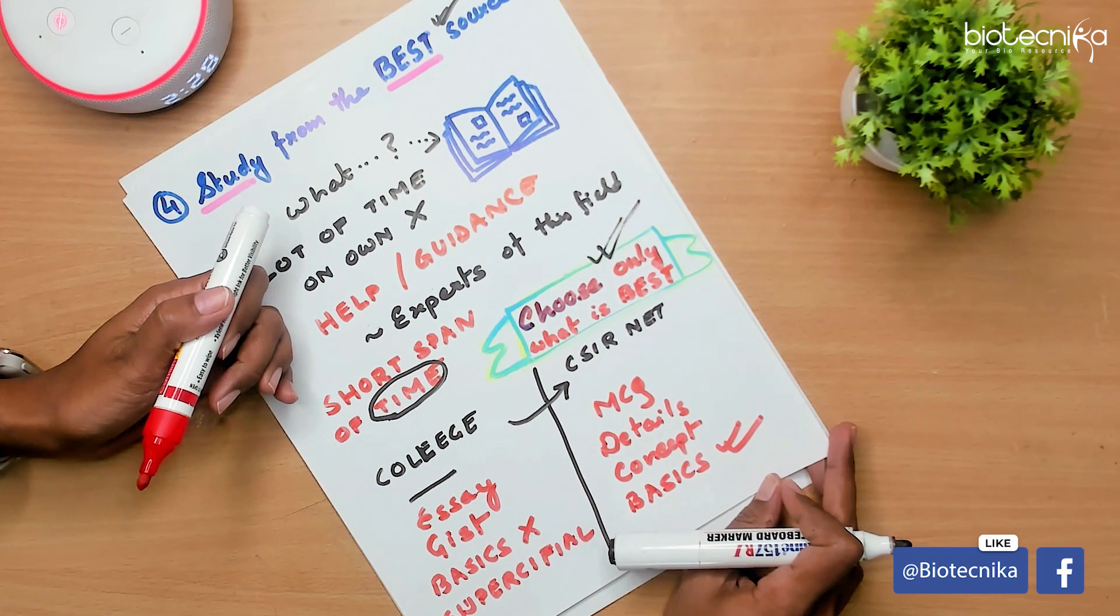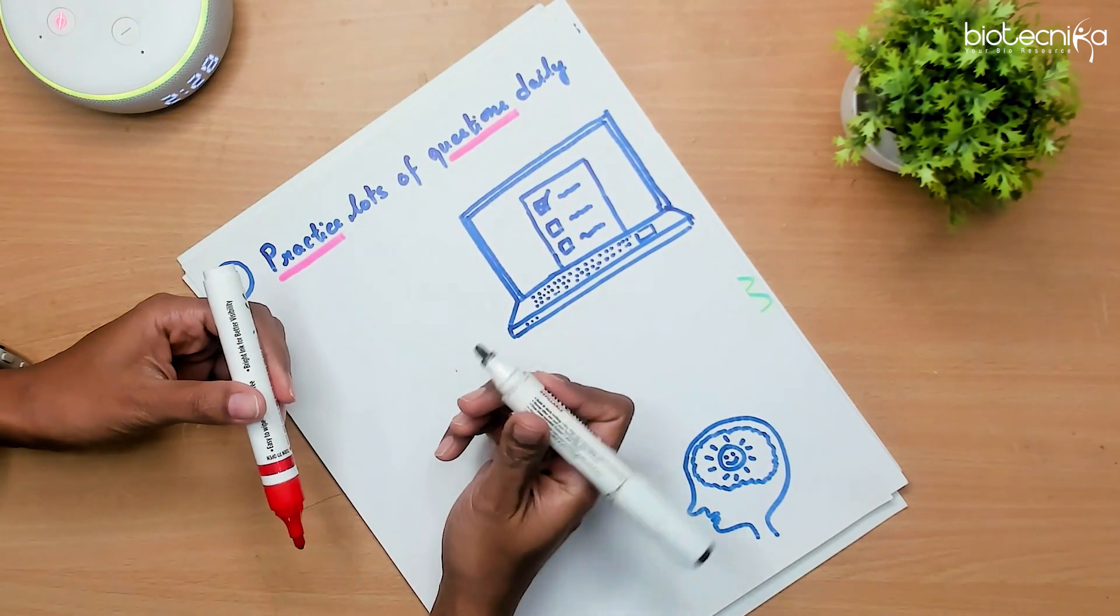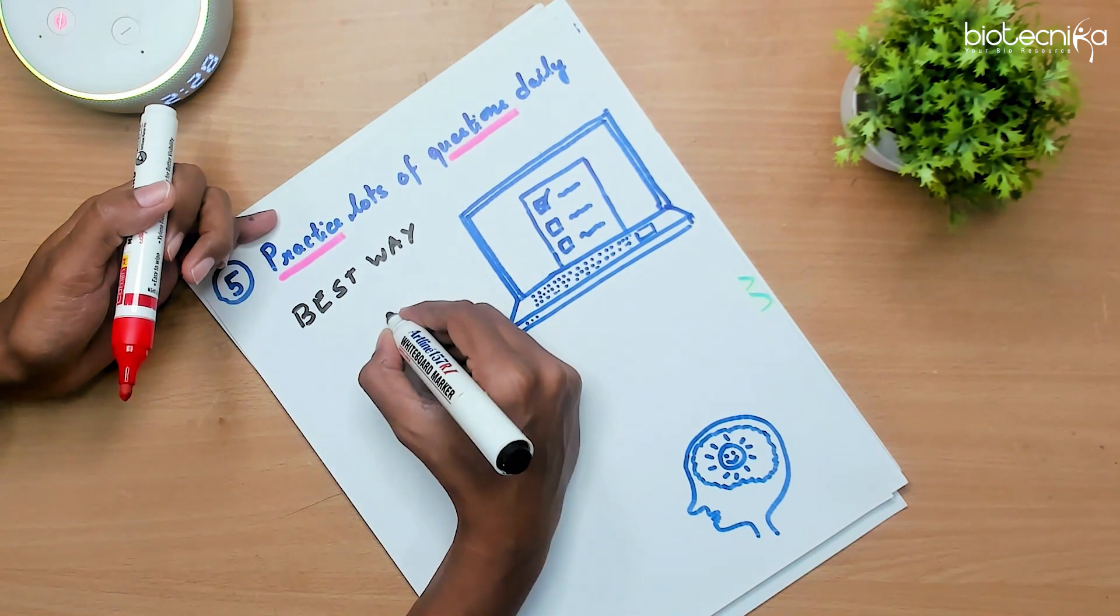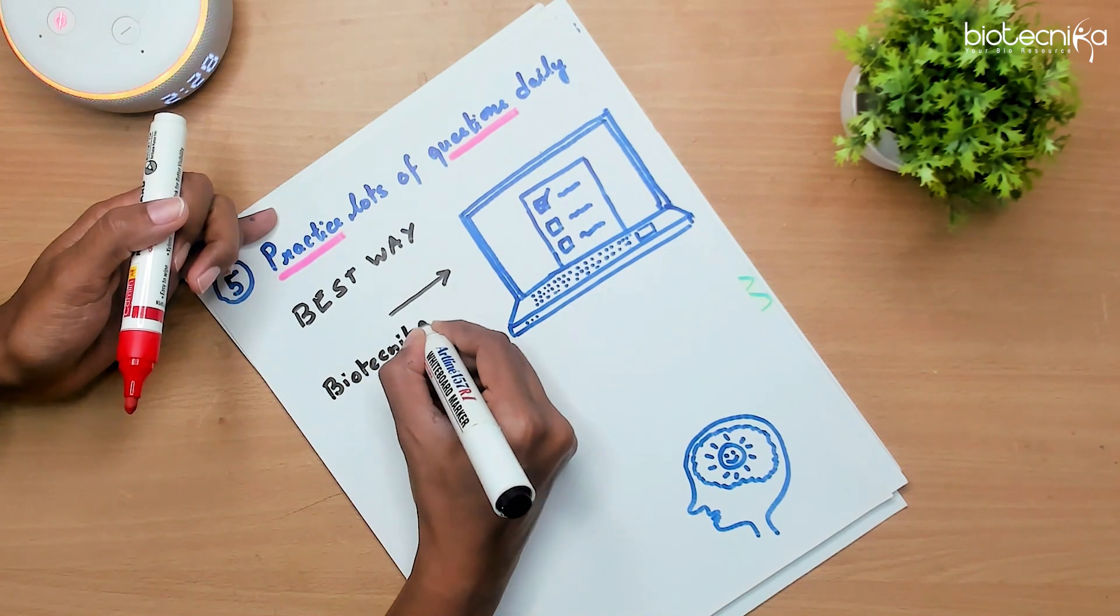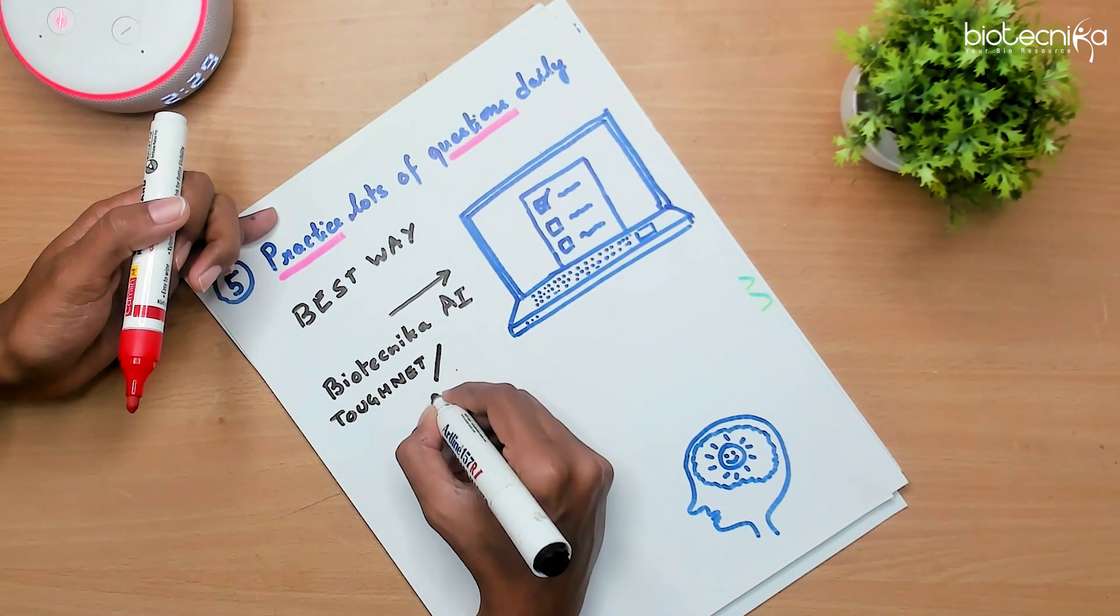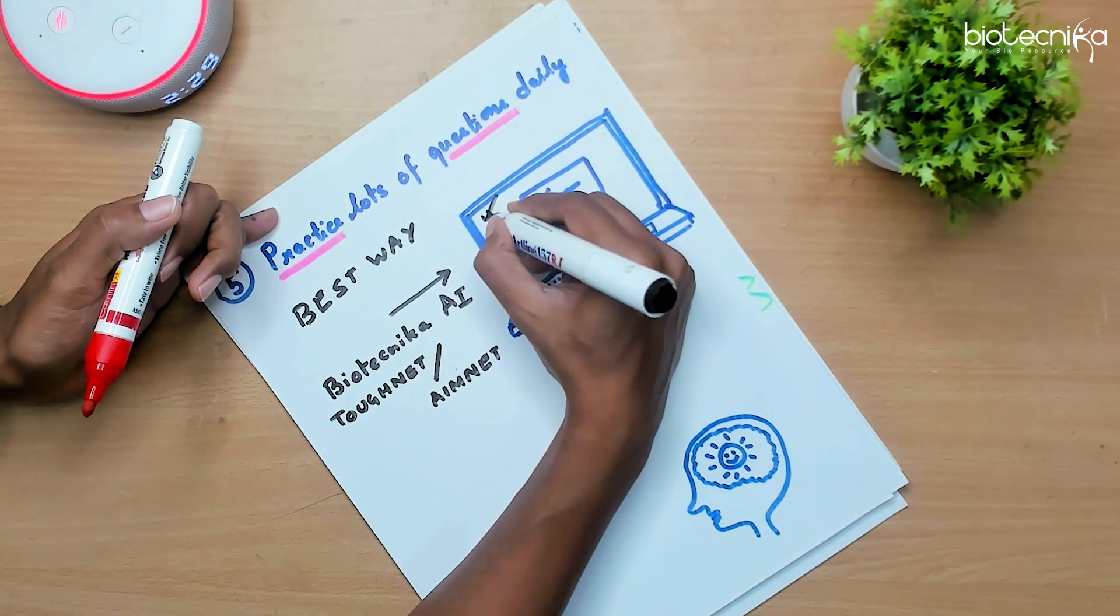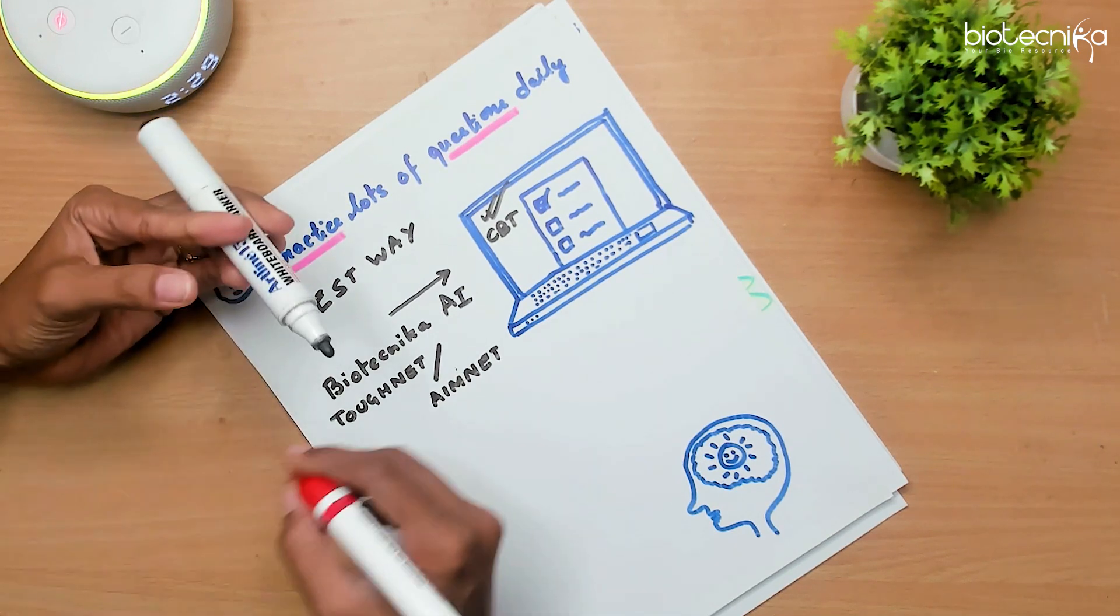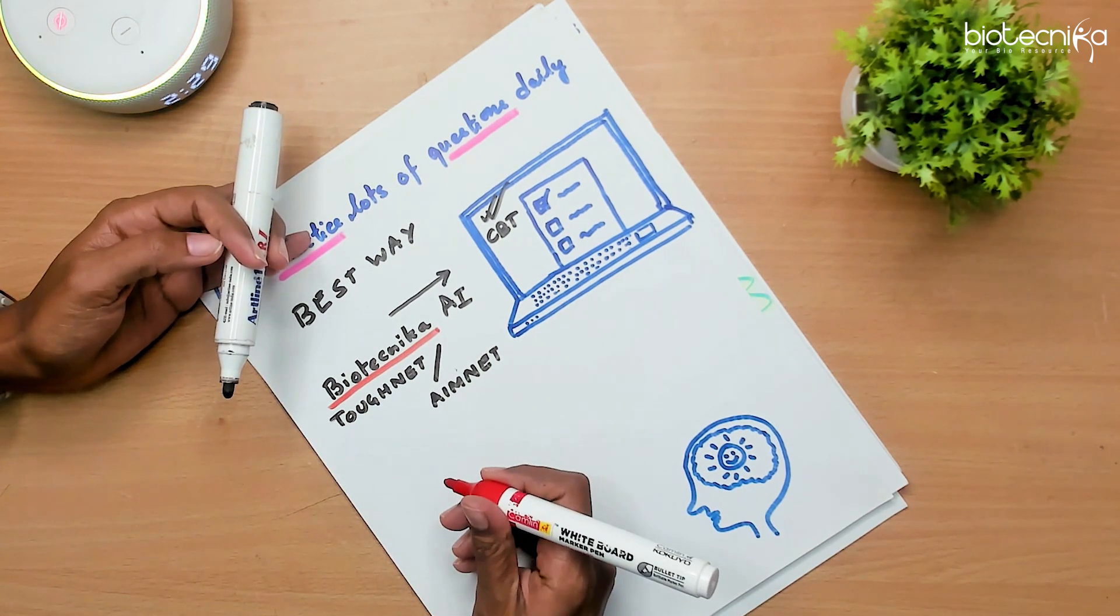The last strategy for the day is practice lots of questions daily. So the best way to polish your skills and improve your performance is to practice how much ever questions you can. So what can you do? Well, we have Biotechnica's AI-powered Toughnet and Aimnet series, which are in the form of the CSIR NET exam question paper pattern. How easy will be that? Sometimes students complain that when we appear for the CBT mode, we will strain our eyes, we are not habituated for the mock tests. Well, Biotechnica already prepares the students with their Toughnet and Aimnet exams for the competition also and for a properly timed examination online.